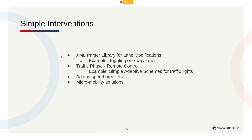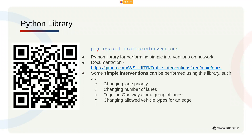We have an XML parser library that can change the XML generated by SUMO to modify the simulation. We can also try remote control of the traffic phase using adaptive schemes, or add speed breakers or micro-mobility solutions. We're firm believers in open source, so you can scan the QR code or download it through PyPI. Simple interventions include changing lane priority or number of lanes, toggling one-ways for a group of lanes, changing allowed vehicle types, or changing the start time of a vehicle on a route.